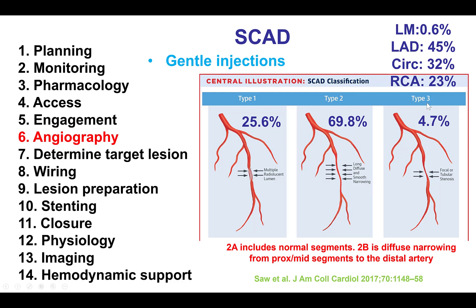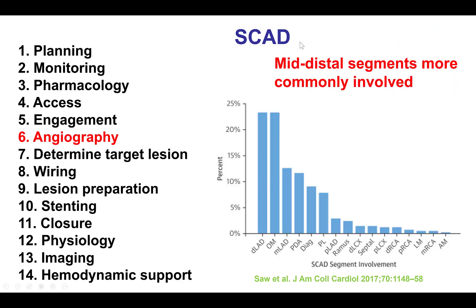There is also type 3 SCAD, which mimics atherosclerosis and presents as a focal or tubular stenosis, for which intravascular imaging is often important to establish the diagnosis. Injections should be gentle to minimize the risk of causing an additional dissection. The majority of SCAD is present in the left anterior descending artery, and the mid and distal segments of the coronaries are more commonly involved.